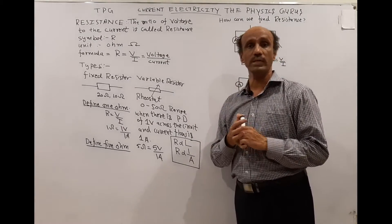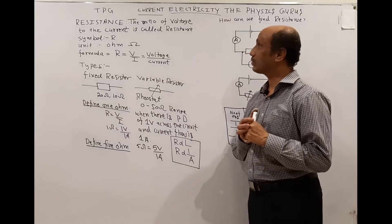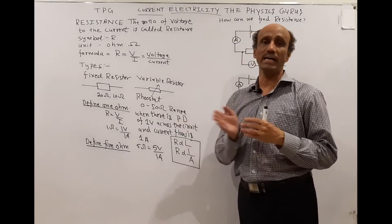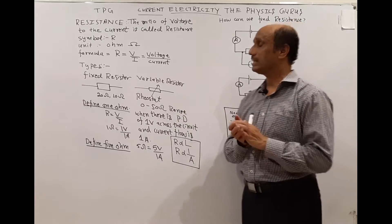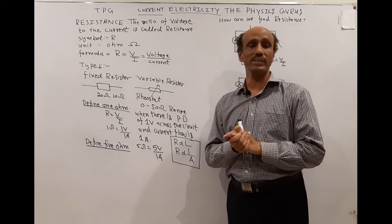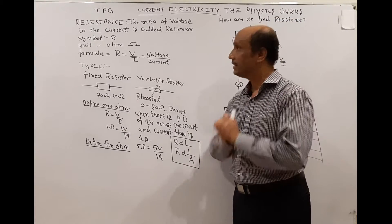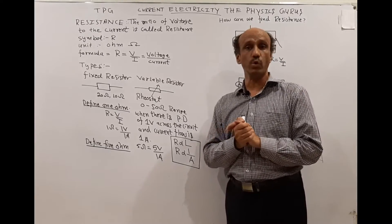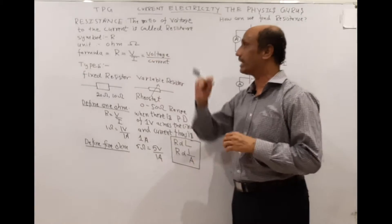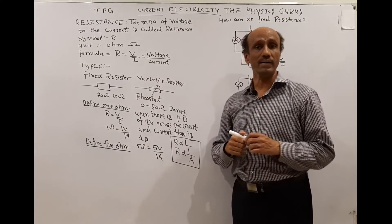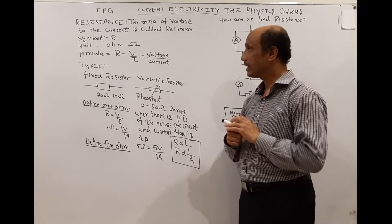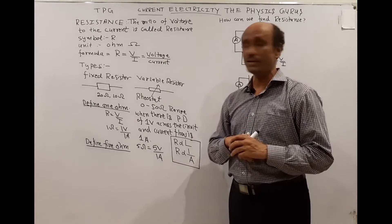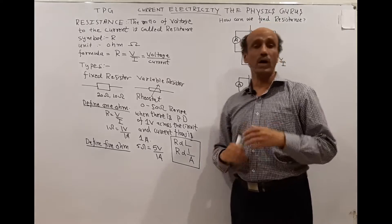Resistance is defined as the ratio of voltage to current. When you divide voltage by current, you get the physical quantity called resistance. Its symbol is capital R, its unit is Ohm, represented by Omega (Ω). The formula is R = V/I, or in words: resistance equals voltage over current.